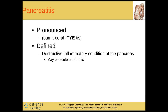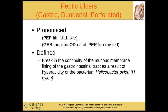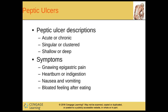Pancreatitis is the destructive inflammatory condition of the pancreas. It can be acute — happening pretty rapidly — or chronic, happening over time. And then we have peptic ulcers, or gastric ulcers. You may hear duodenal ulcer or perforated ulcer. This is a break in the continuity of the mucous membrane lining of the gastrointestinal tract as a result of hyperacidity or a bacteria called H. pylori. Peptic ulcers can be acute or chronic, single or clustered, shallow or deep. Symptoms include gnawing epigastric pain, heartburn or indigestion, nausea and vomiting, and a bloated feeling after eating.